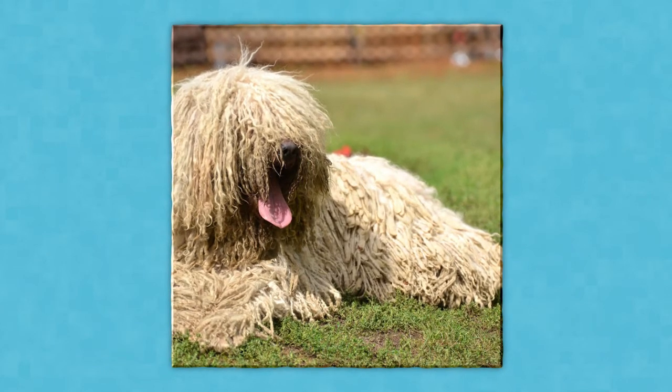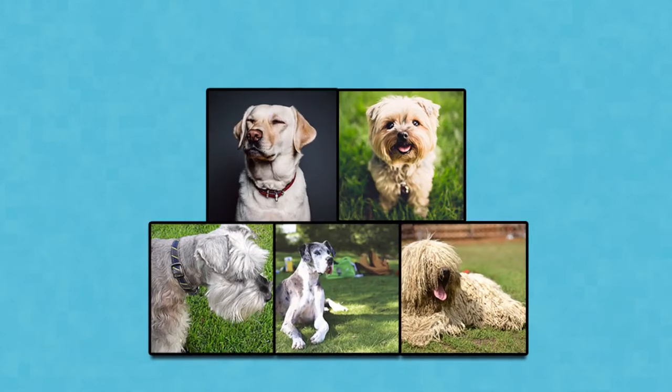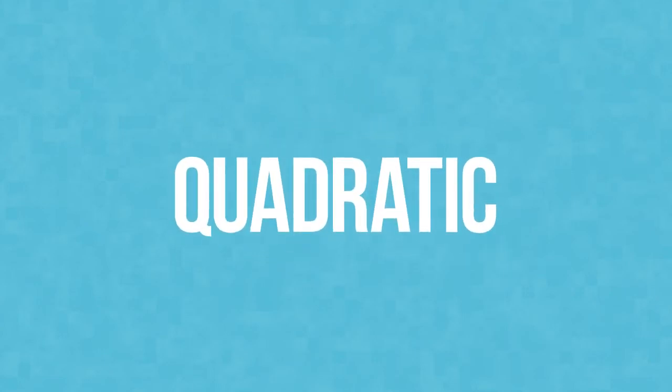What about this critter? Is she a dog? Just like seeing a variety of dogs helps you learn the essence of what makes a dog a dog, students need to get to the essence of what makes a quadratic function, well, quadratic.